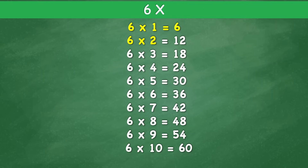6 times 2 equals 12. 6 times 3 equals 18. 6 times 4 equals 24. 6 times 5 equals 30. 6 times 6 equals 36. 6 times 7 equals 42. 6 times 8 equals 48. 6 times 9 equals 54. 6 times 10 equals 60.